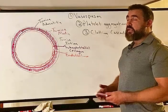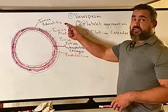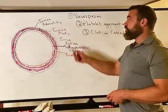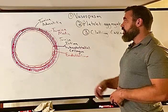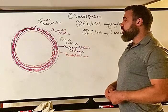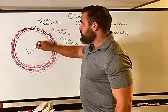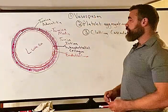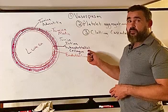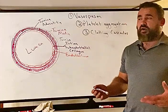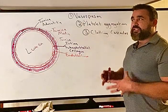All blood vessels have a tunica adventitia, which is the outer connective tissue layer; the tunica media, which is the middle layer made of smooth muscle that helps with vasoconstriction and vasodilation; and the tunica intima, which has two important layers. The endothelium lines the lumen — the area where blood is flowing. Just between the endothelium and the tunica media is the basement membrane, or subendothelial collagen.